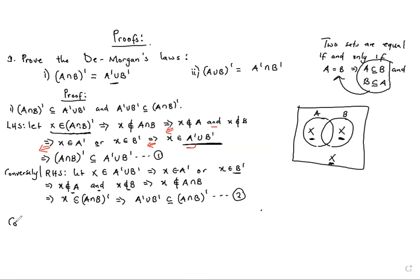Combining argument one and argument two, we have (A∩B)' being equal to A'∪B'. And that's how you show De Morgan's first law. It's very easy — once you know one way, the other way is just to reverse the arrows and you get the other side.